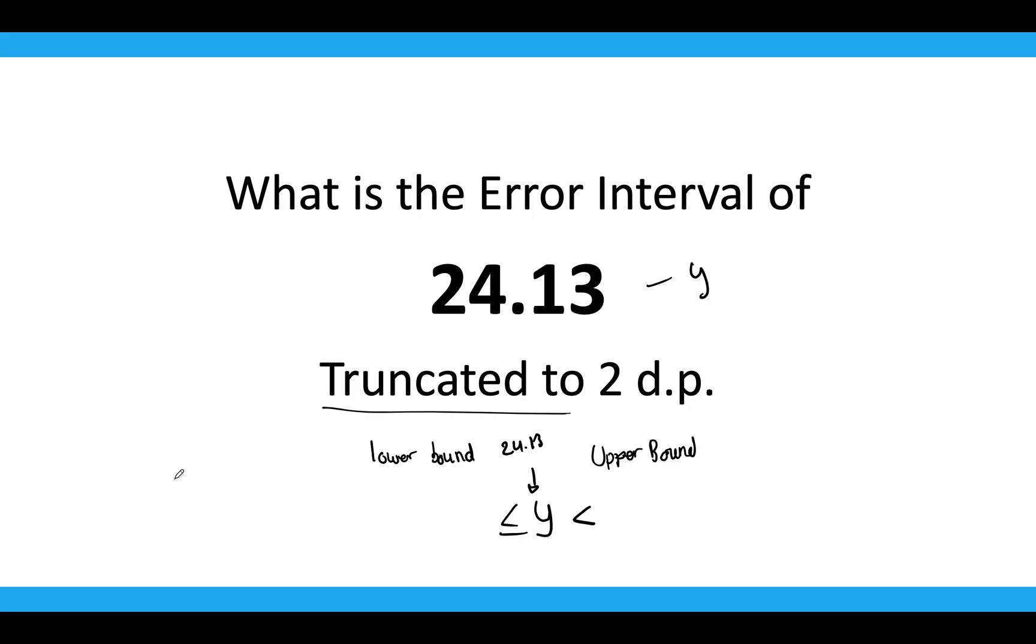Well, if we're truncating the number, then the lower bound would be the number itself because it can be 24.13 and the numbers after it. But if it's 24.12, then it would be something else. It would be a different number. And the upper bound would be something. It has to be strictly less than. It would be 24.14. And that would be our error interval.